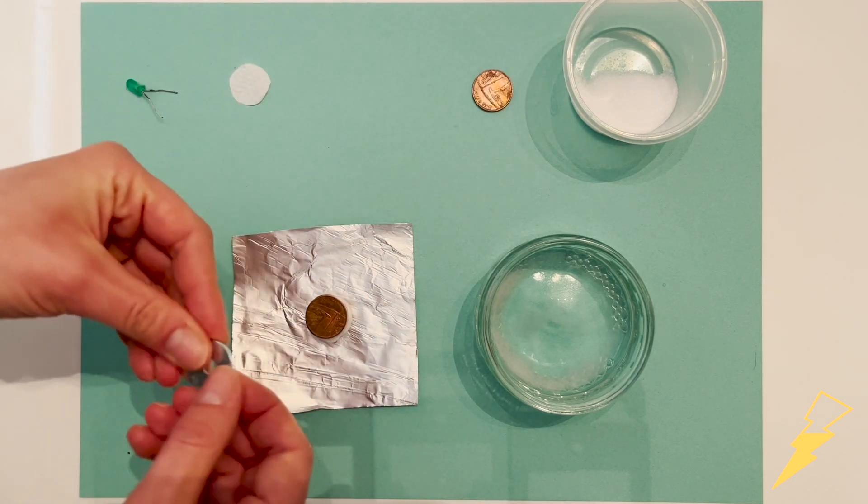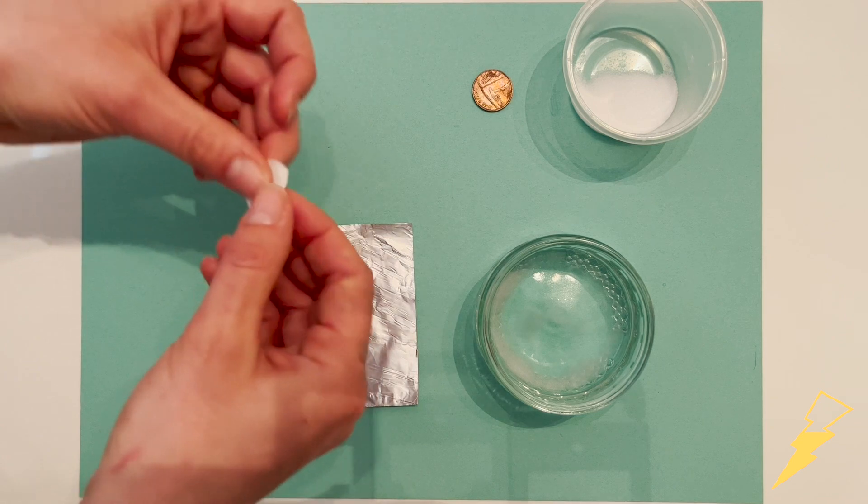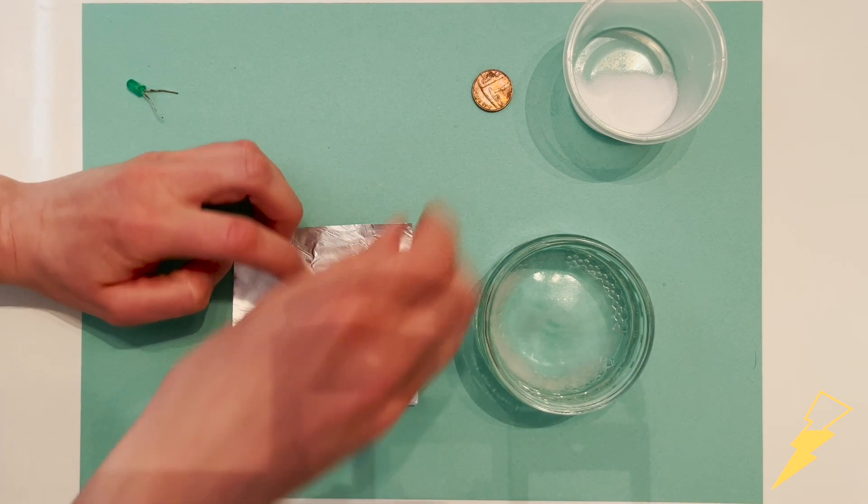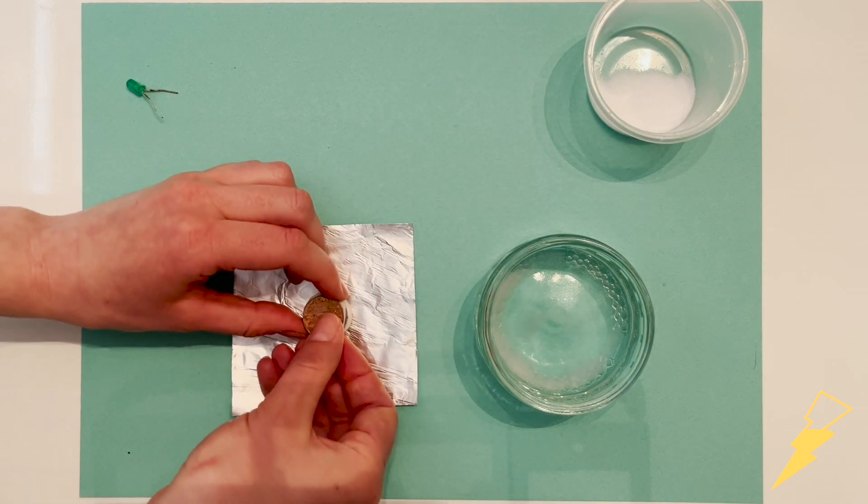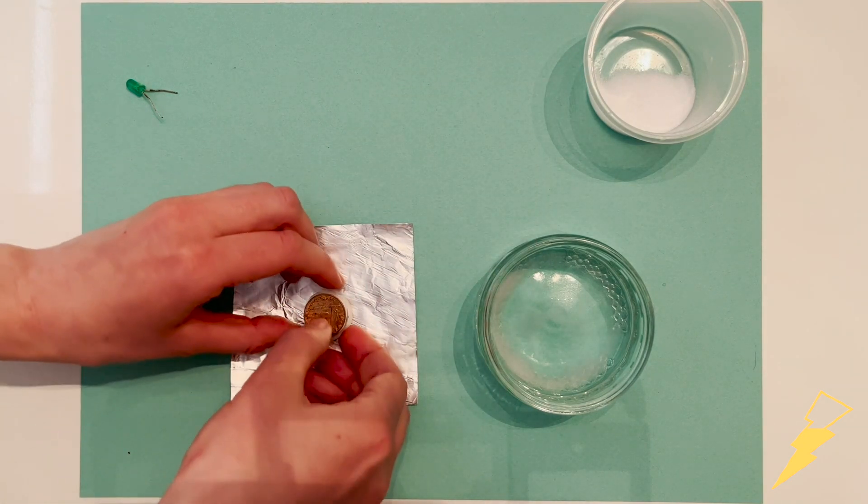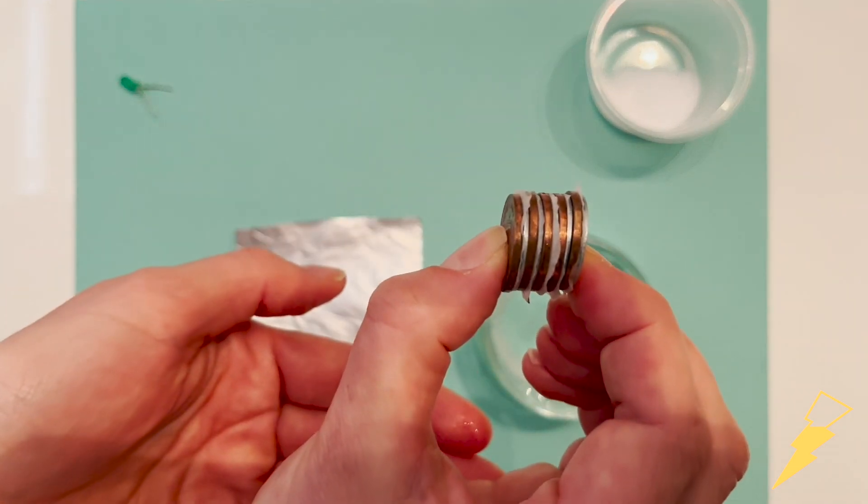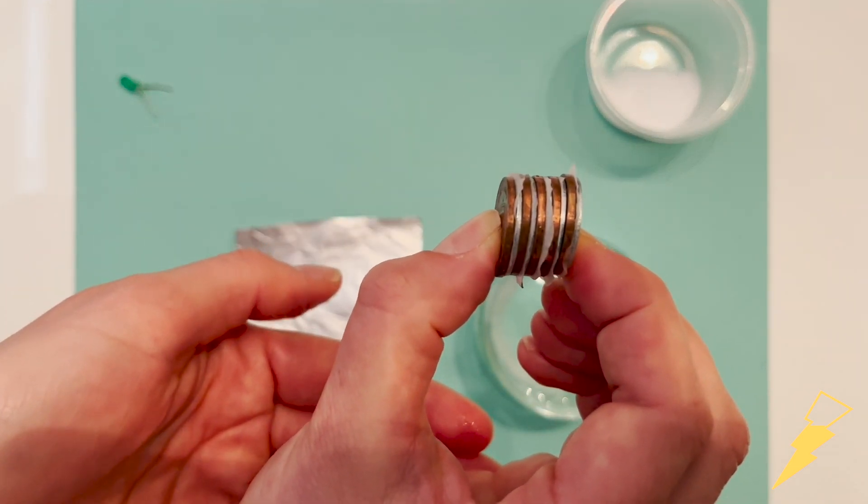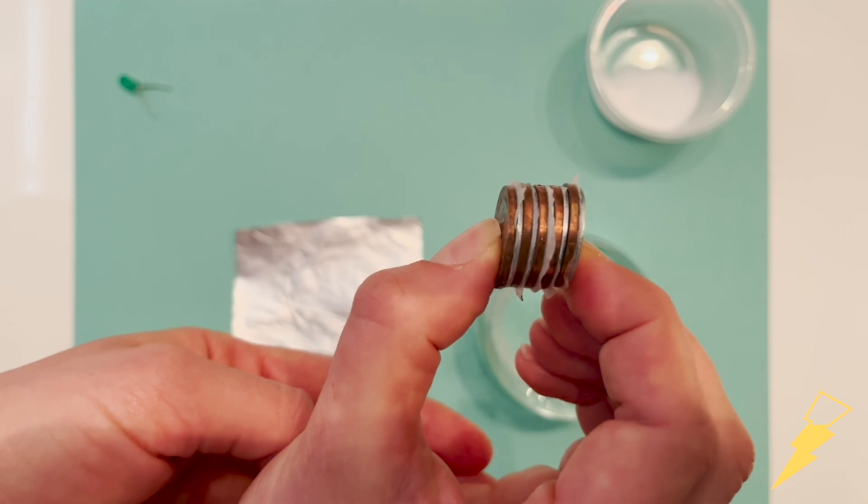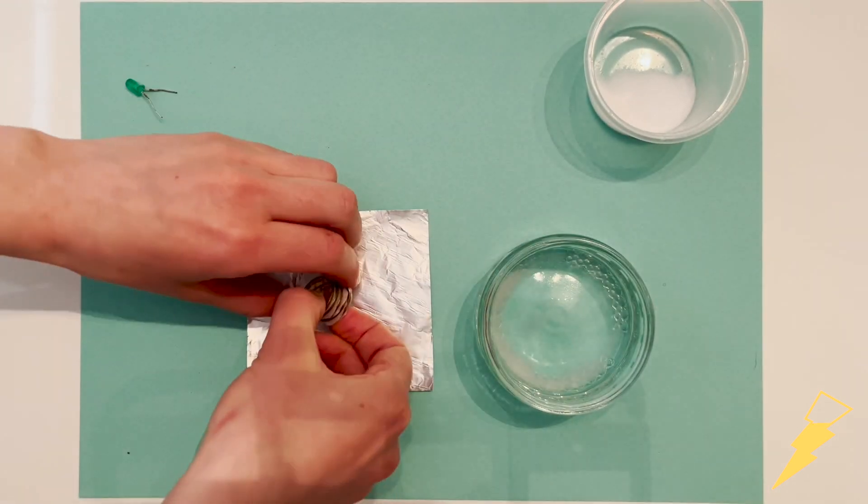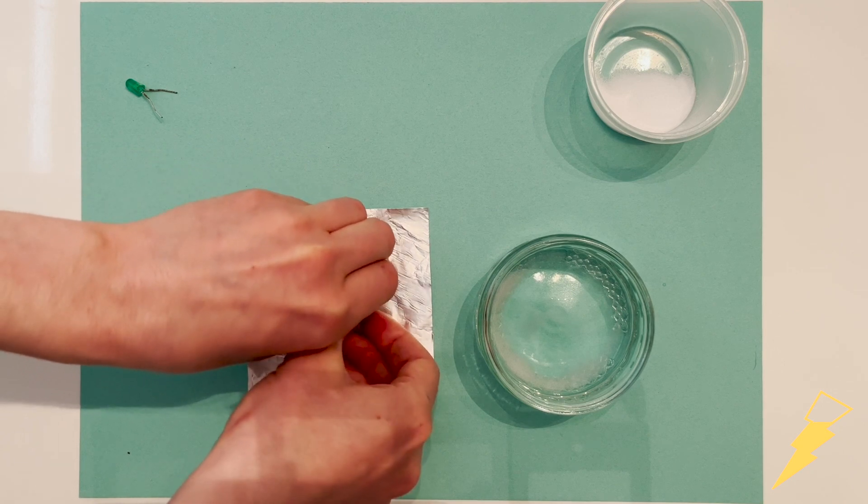So that's my five cells stacked together. If I hold this up to the camera, you should be able to see all the cells are stacked in the same way, one on top of the other. So now I'm going to put the battery back down on my foil, and we can test to see if the battery works using the LED.